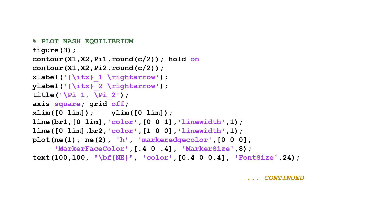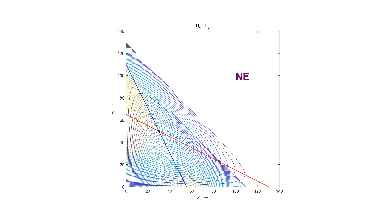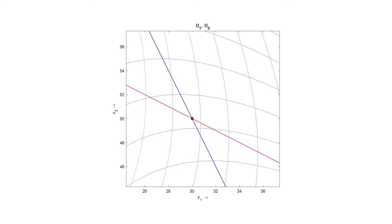This is the code to produce Figure 3, which shows the Nash equilibrium point. Zooming in, this is the Nash equilibrium point at the intersection of the best responses. Here, Pi1 contours are horizontal and Pi2 contours are vertical.